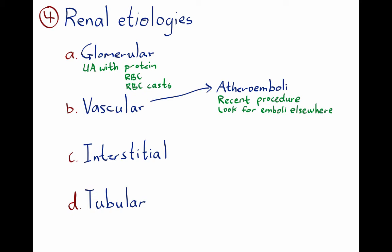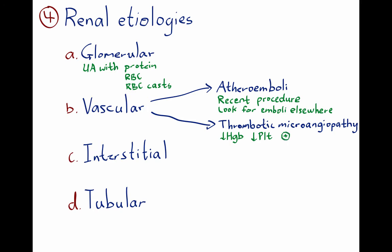Rarely, we need a kidney biopsy for atheroembolism. The second vascular etiology is thrombotic microangiopathy, suspected when the patient has a falling hemoglobin, a falling platelet count, and evidence of microangiopathic hemolytic anemia with schistocytes.